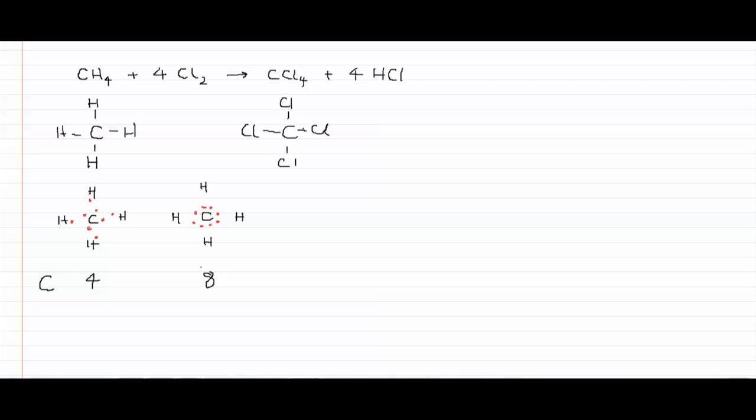And to get the oxidation number, we say the number of electrons shared minus the number in the ionic model, which in this case is four minus eight, which gives us minus four.